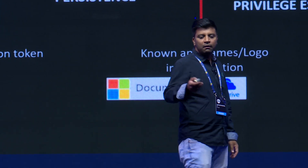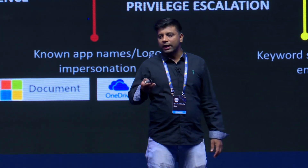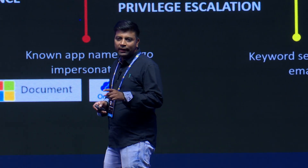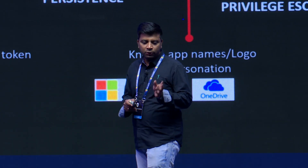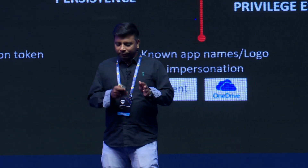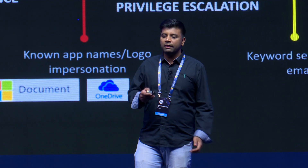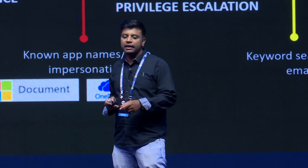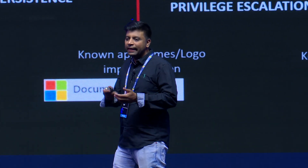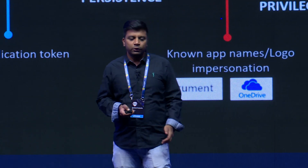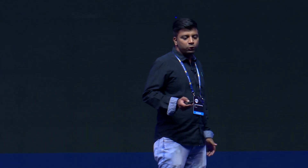Exfiltration is performed using an inbox forwarding rule, which requires high-privilege permissions granted to the app. There is also a defense evasion step of clearing tracks once exfiltration is complete — the attacker attempts to remove evidence of activity. With that, let's move on to Campaign Two.